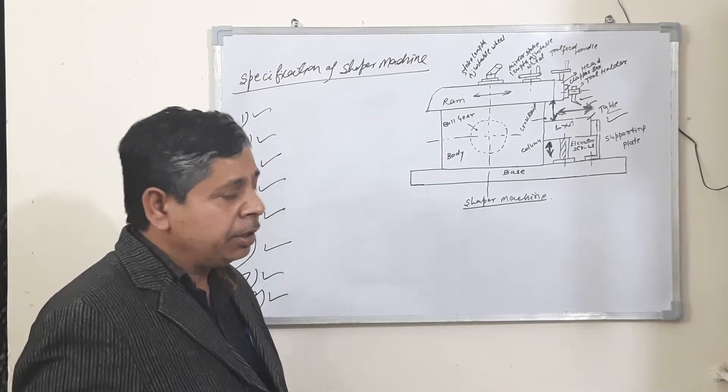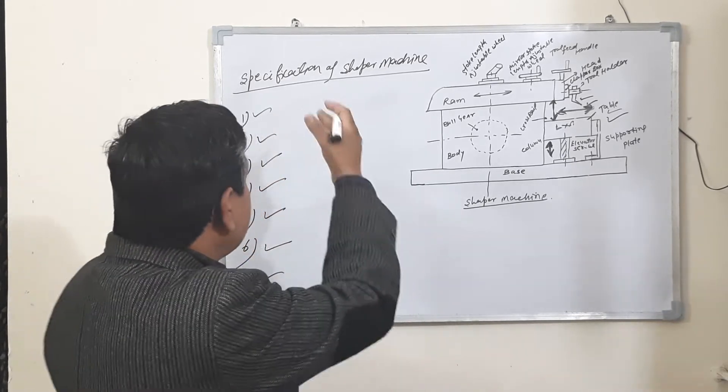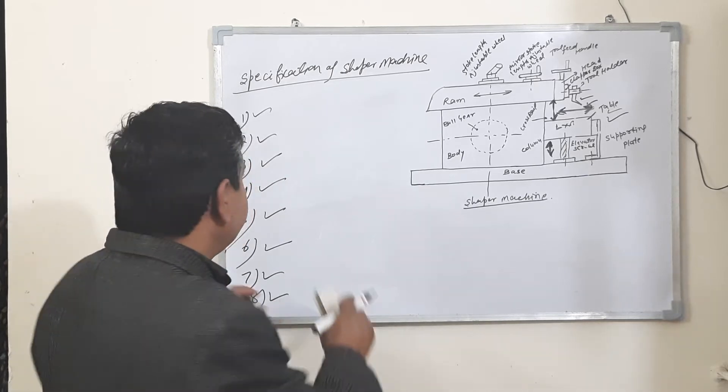Number nine: how much area is covered by the shaper machine. These are the specifications of the shaper machine.